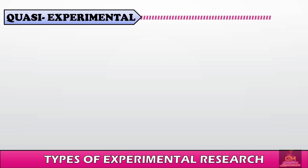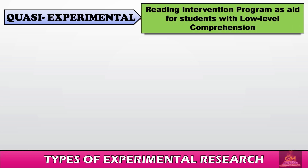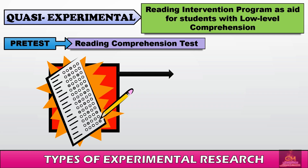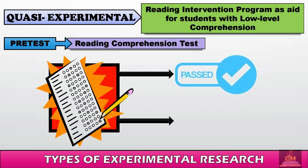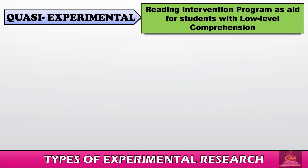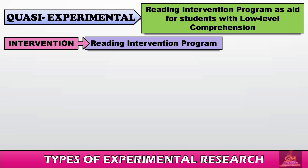Consider this example: a teacher wants to test a reading intervention program as an aid for students with low-level comprehension. Since this is quasi-experimental research, the study starts with a pre-test — a reading comprehension test that determines which students have passed and which have failed. Recognizing the students who failed is important, as they become the participants for the reading intervention program.